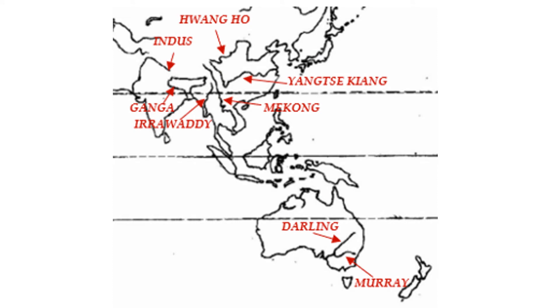Our next continent is Australia. Here we have the Darling River and below that is the Murray River.